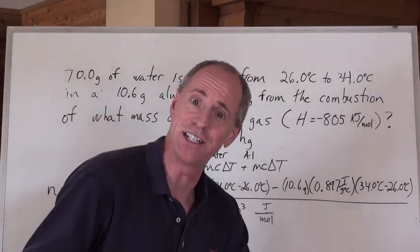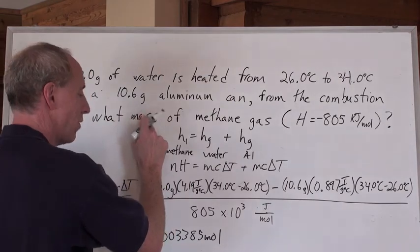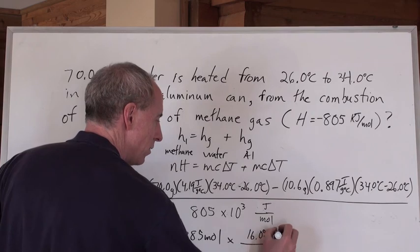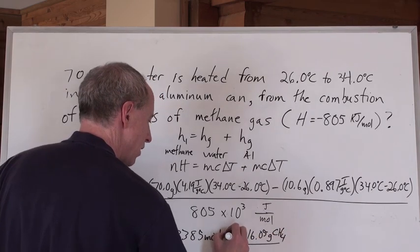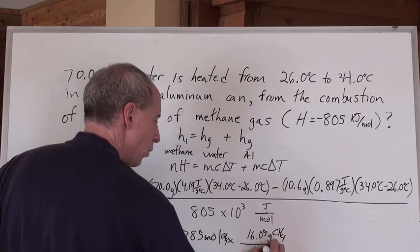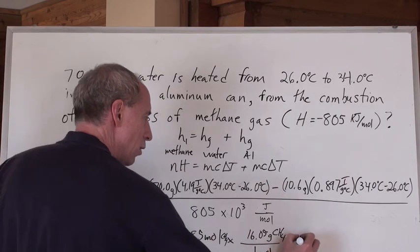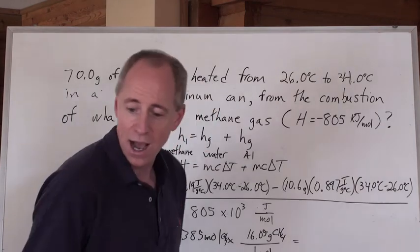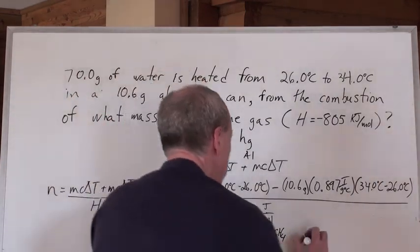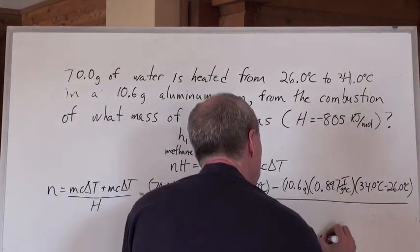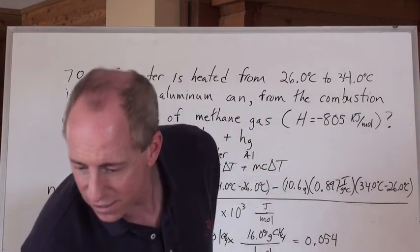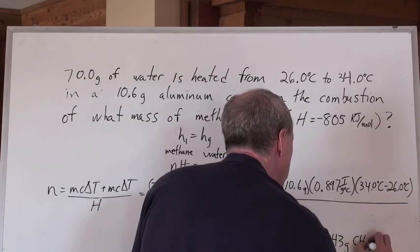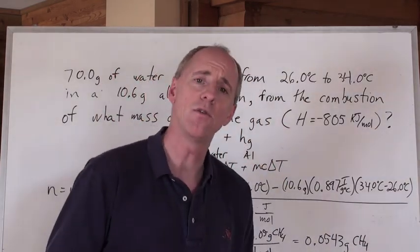Because that's not the finishing of the question. We wanted the mass of the methane. Hey, guess what, everybody? 16.05 grams of CH4, because that's CH4 there. Every time you have one mole of CH4, that's the molar mass. When you multiply the 16.05 grams per mole times the number of moles you get there, I get 0.00543 grams of CH4. That doesn't sound like a lot of grams of CH4.